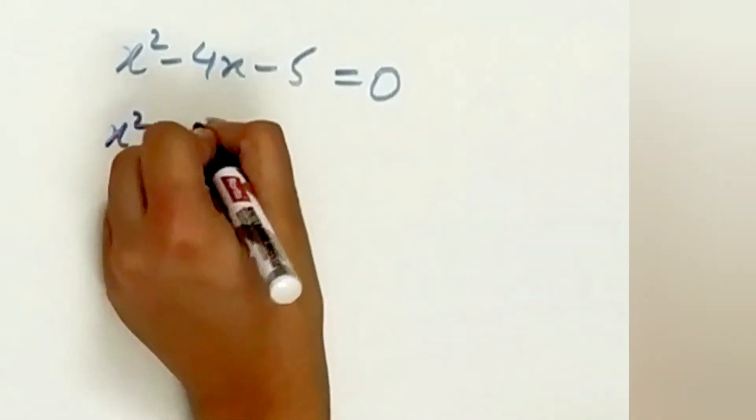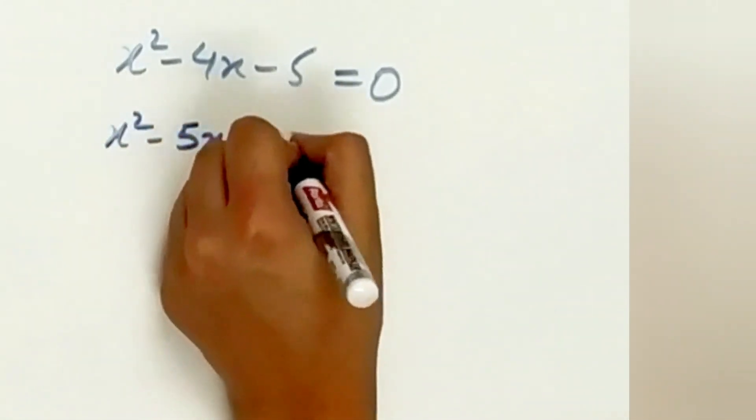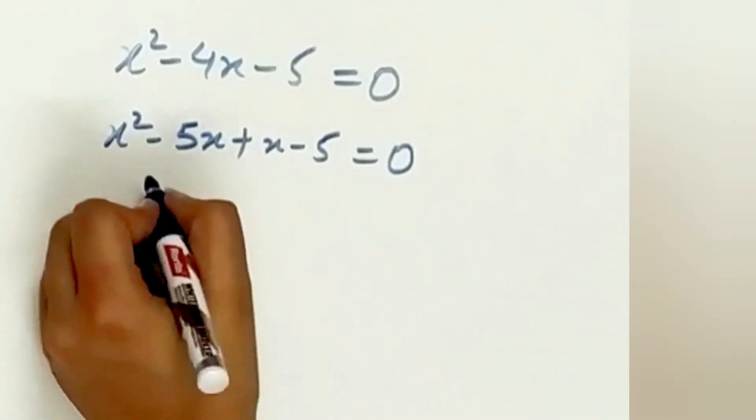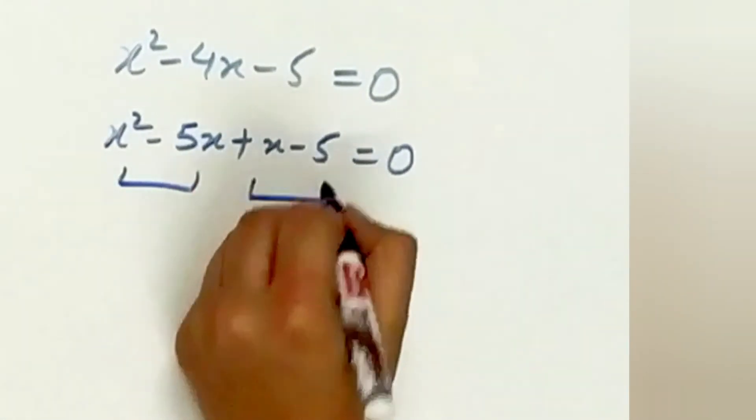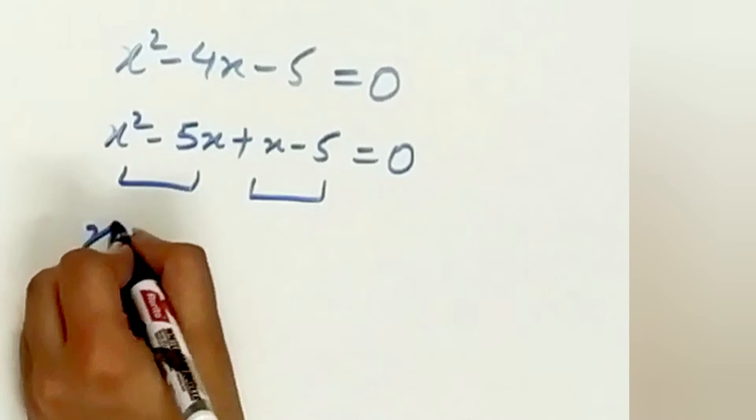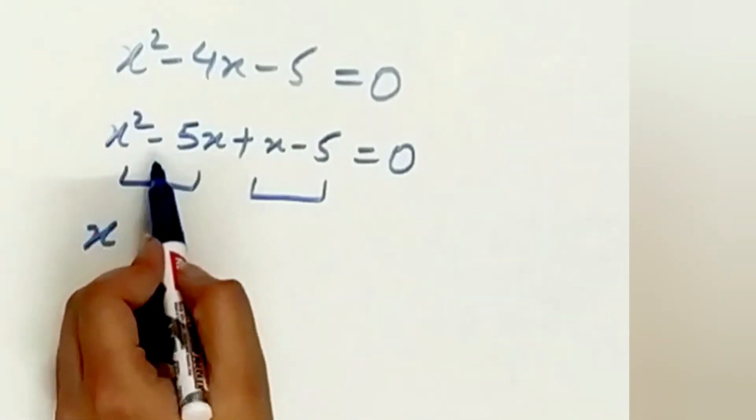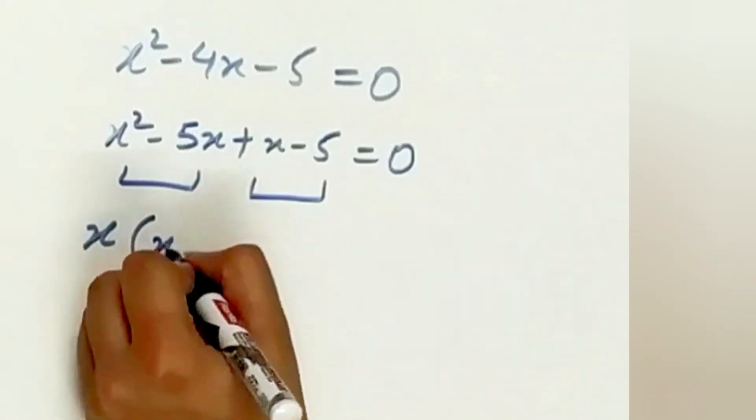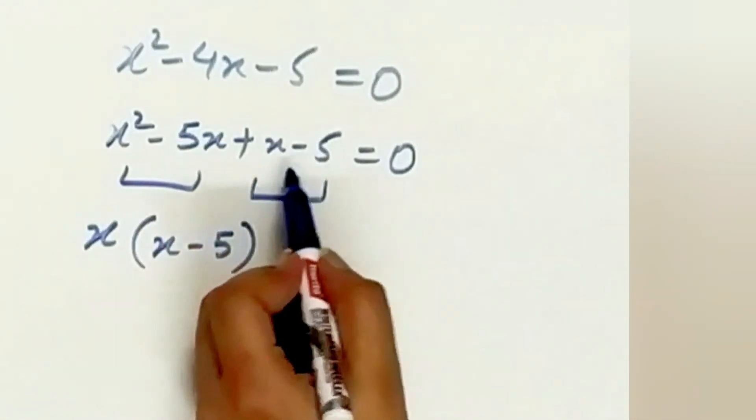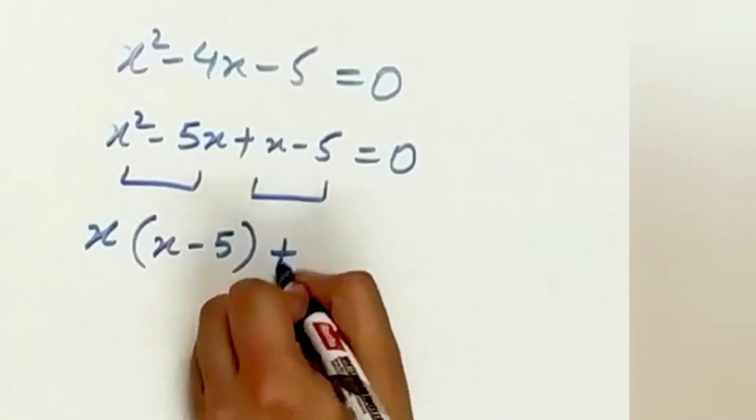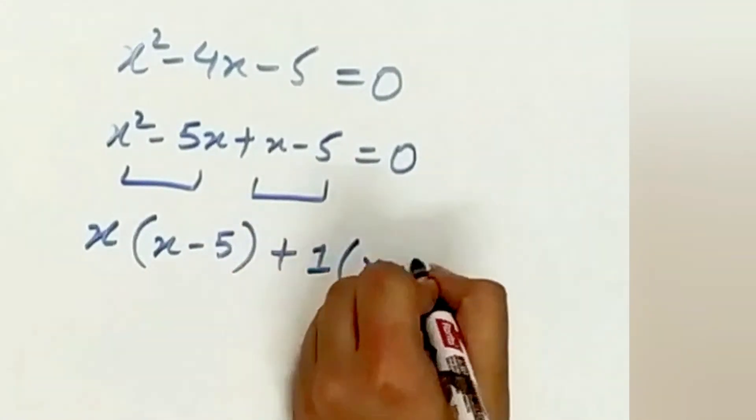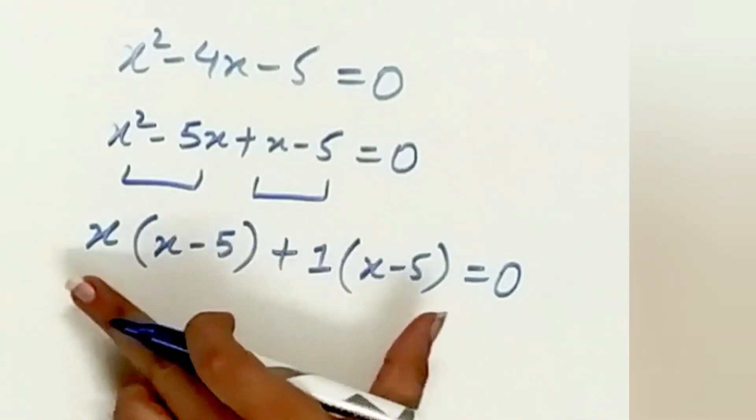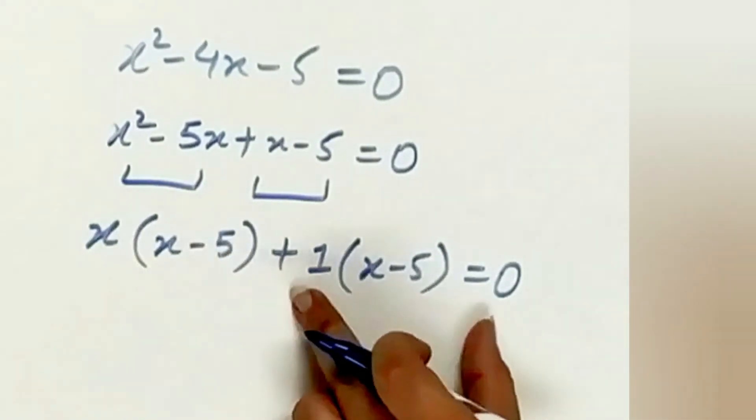Substitute minus 5x plus x in place of minus 4x. x square minus 5x plus x minus 5 equals 0. Pair the first and the last two terms. x is common in x square as well as in minus 5x. And 1 is common in x minus 5.